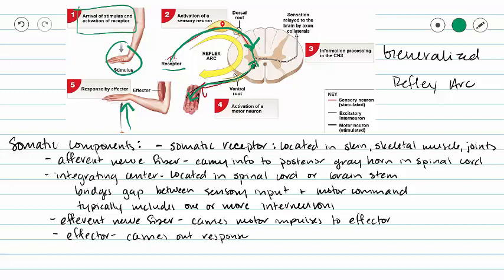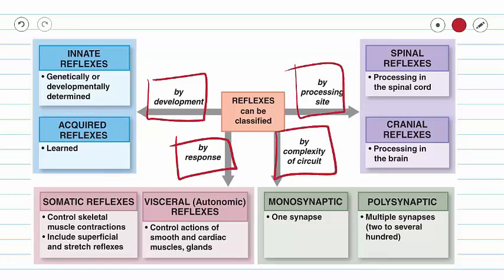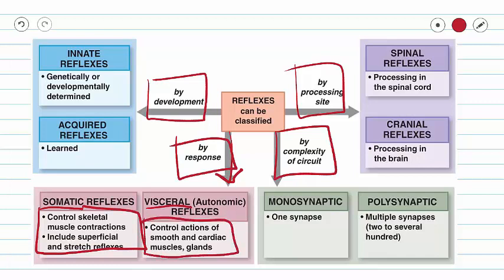We are going to talk about specific reflexes in later videos. Next, we are going to look at how reflexes can be classified. Reflexes can be classified by development, response, complexity of circuit, and by processing site. We have already discussed classification by response by defining our somatic and visceral reflexes. In a somatic reflex, we use skeletal muscles to carry out the actions. In visceral reflexes, we use smooth or cardiac muscles, glands, and adipose tissue to carry out the reflex.